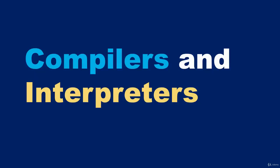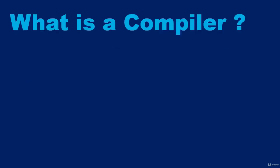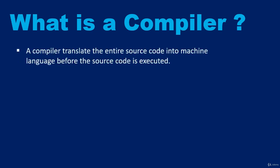In this video I'll introduce compilers and interpreters. A compiler translates the entire source code into machine language before the code is executed. Examples of compiled languages include C and C++. For instance, source code with 'x = 7, y = 8, sum = x + y' needs to be compiled into machine code (zeros and ones) before execution.